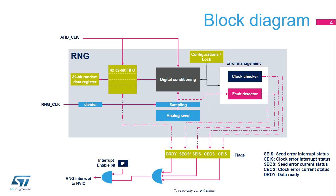This simplified block diagram of the RNG shows its basic functional and control modules. This architecture is compliant with NIST SP890B specification. The random number generator is based on an analog circuit made of several ring oscillators, whose outputs are sampled, then XOR'd, to generate the seeds that feed a digital conditioning block that is able to produce four 32-bit random numbers per round of computation. The sampling of analog seeds is clocked by a dedicated RNG clock signal plus internal divider, so that the quality of the random number is independent of the HCLK frequency. The contents of the conditioning block is transferred into the data register through a four-word FIFO.